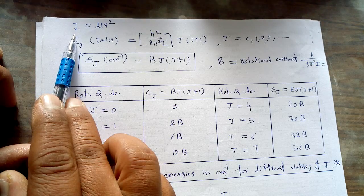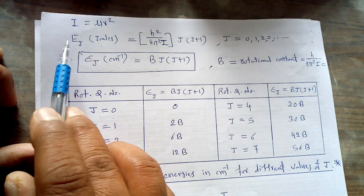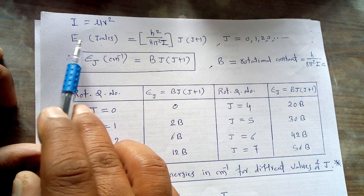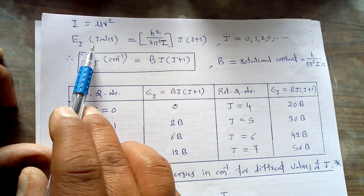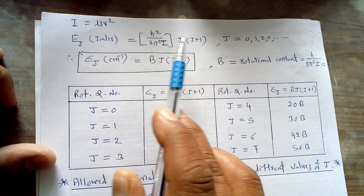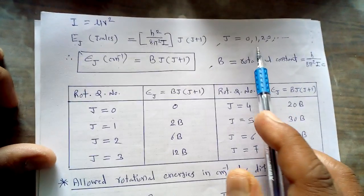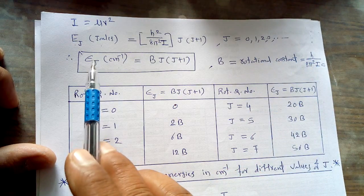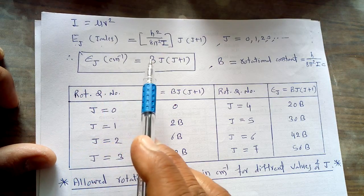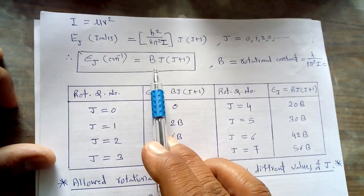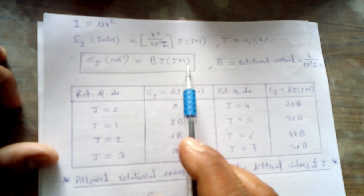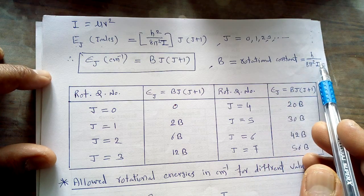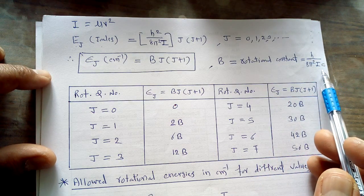Once we derived this equation we calculated the rotation energy for a diatomic molecule in joules: E_J = h² / (8π²I) · J(J+1), where J = 0, 1, 2, etc. If we calculate this energy in units of per centimeter, it is given by B·J(J+1), where B is the rotational constant defined as h / (8π²Ic).